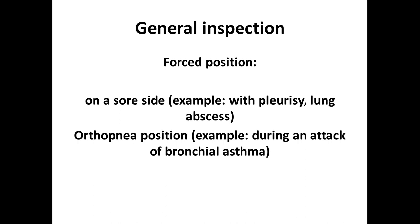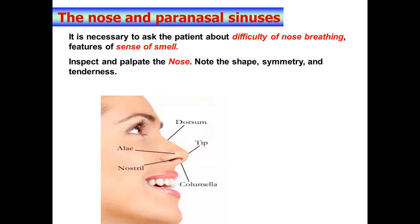Examination and palpation of the chest should start from general inspection. During general inspection you can assess first the position of the patient — for example, position on the sore side may be due to pleuritis or lung abscesses. An orthopneic position may occur during bronchial asthma attack. Examination of the respiratory system starts from examination of the upper airways.